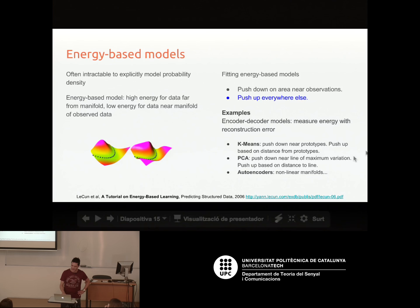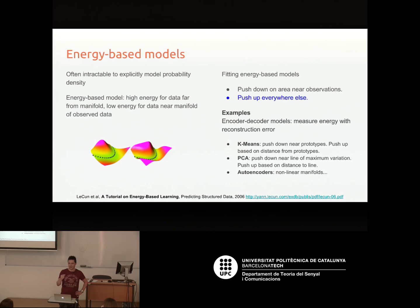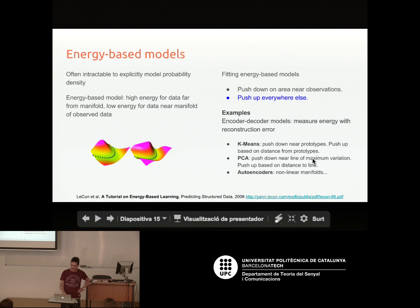K-means can be thought of as an encoder-decoder model: you encode by mapping to the nearest cluster center, and the decoder returns the cluster center, so the error is the distance between the point and the cluster center — low energy around cluster centers, getting higher further out. PCA pushes down near a line, and autoencoders allow you to do non-linear manifolds.